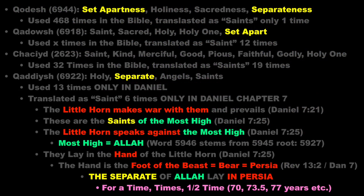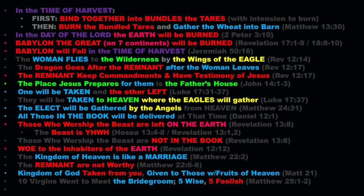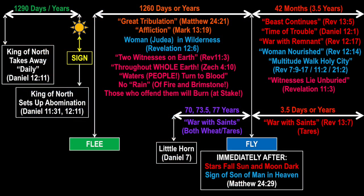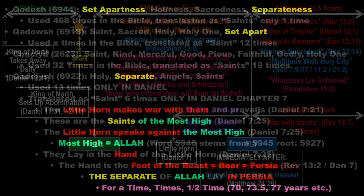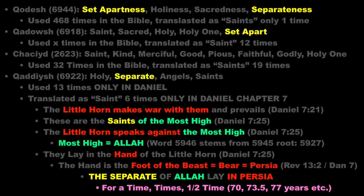The word for saints in Daniel 7 represents those in Persia — the separate — but the wheat and tares grow together and are not separated until the harvest. So some of the saints of Allah go up in the rapture and others stay behind. Those who are saved by God are in heaven for the final three and a half years after the asteroid, and the ones left behind are on the earth during that time — those are the ones the Beast overcomes during the final 42 months. This word for saint in Daniel 7 means the separated, not the definition that Babylon created. Even when the word holy is used, it means separated or set apart.